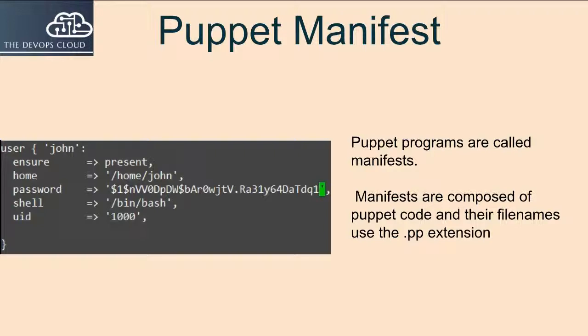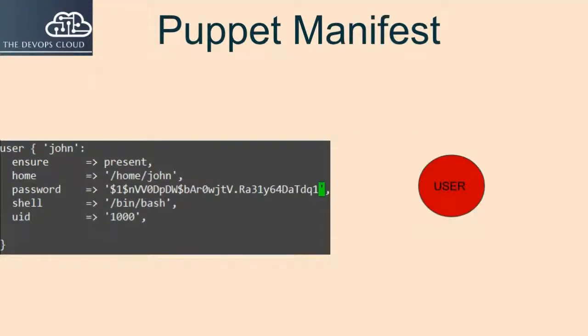A manifest is a file containing Puppet configuration language that describes how resources should be configured. The manifest is the closest thing to what one might consider a Puppet program. It declares resources that define state to be enforced on a node. It is therefore the base component for Puppet configuration policy and a building block for complex Puppet modules.